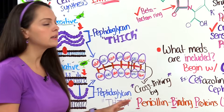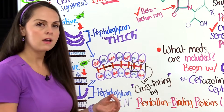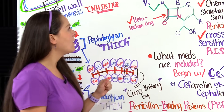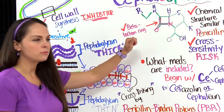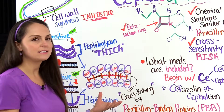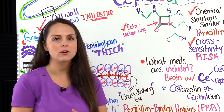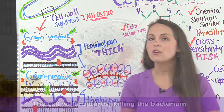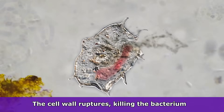If this cross-linking process doesn't happen properly, we get a faulty peptidoglycan layer that can't withstand intense osmotic pressure — which is exactly what we want. With a cephalosporin, its beta-lactam ring goes and binds with the penicillin-binding protein, hence affecting how this cross-linking process happens. When we have a bad cross-linking process, we get a cell wall that is no longer strong and protective and cannot withstand the intense osmotic pressure within the cell — hence it ruptures and dies, and we have dead bacteria.